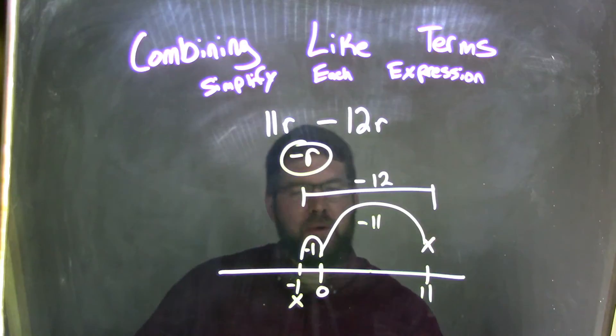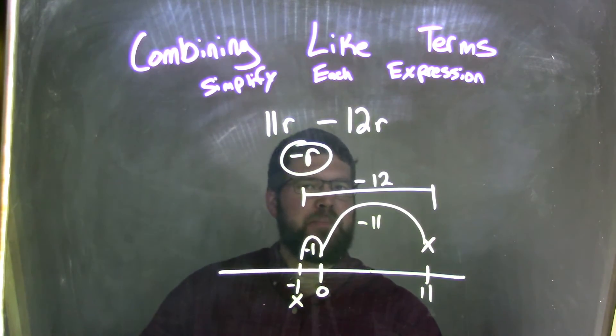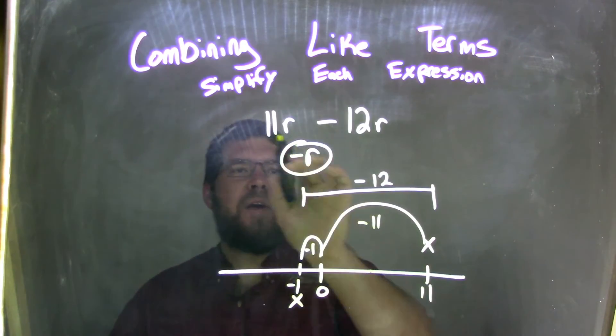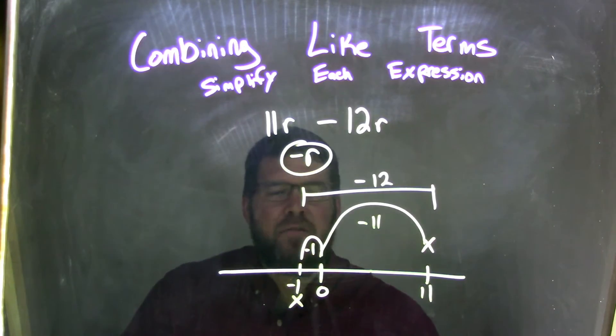Because when we have a variable, we don't put the coefficient 1 in front of it. It's not as clean. So, again, let's recap. We start with 11r minus 12r. If we're good in practice, and we've seen this multiple times, we'll know that it's going to be negative r.